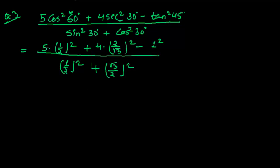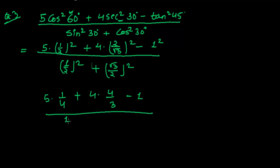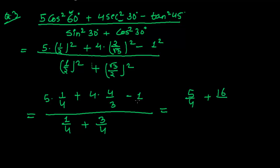Now let me solve: 5 times (1/2) squared is 5 times 1/4, which is 5/4. Plus 4 times (2/root 3) squared: 2 squared is 4, root 3 squared is 3, so that gives 16/3. Minus 1 divided by 1/4, and root 3 squared is 3, 2 squared is 4.